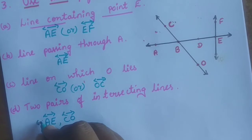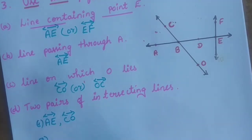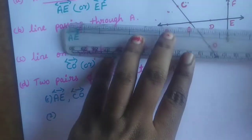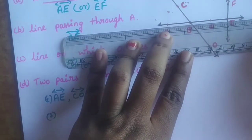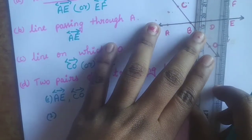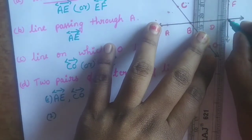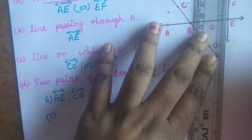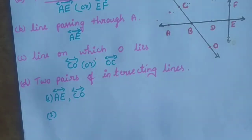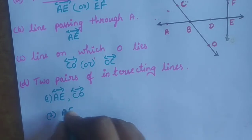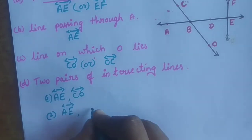Another pair of intersecting lines: AE and FE. These two lines intersect at point E.